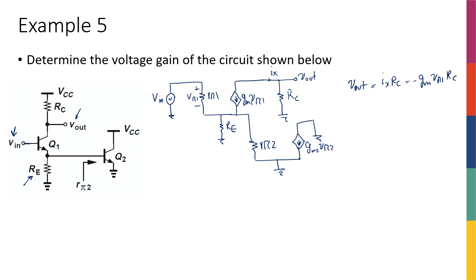That's equal to negative GM Vpi1, and then because it's a common emitter with emitter degeneration, I know the gain is going to be this. So I know the gain is going to be equal to Vout over Vin.